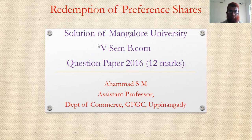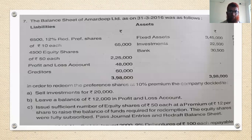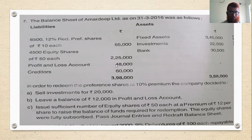The question is like this. The balance sheet of Amar Deep Limited as on 31st March 2016 was as follows: 6,512 redeemable preference shares of ₹10 each — ₹65,000; 4,500 equity shares of ₹50 each — ₹2,25,000; profit and loss account — ₹48,000; creditors — ₹60,000; fixed assets — ₹3,45,000; investment — ₹22,500; bank — ₹30,500. Balance sheet total: ₹3,98,000.